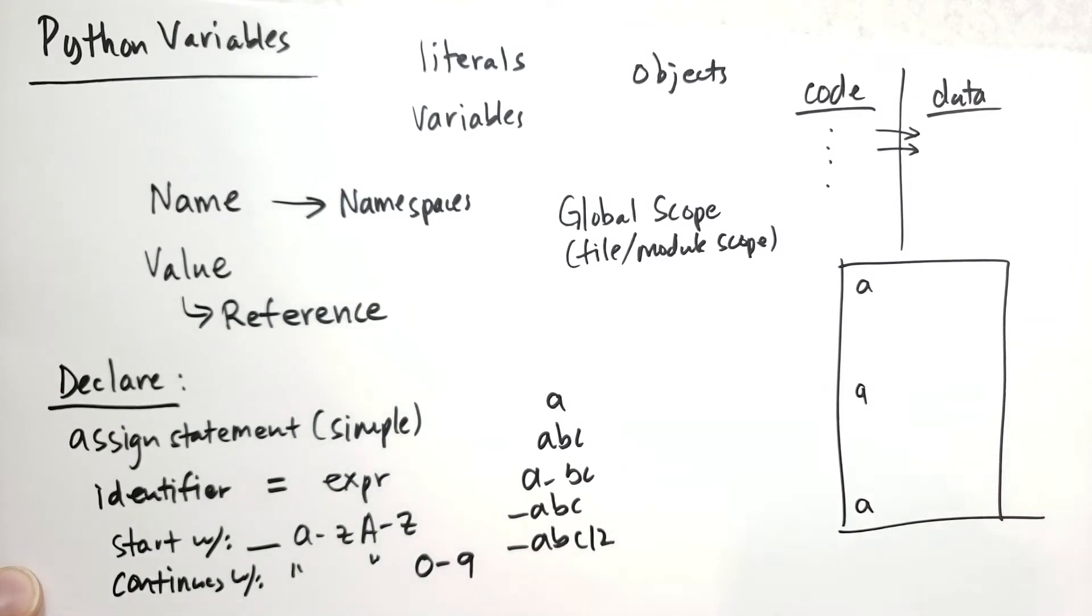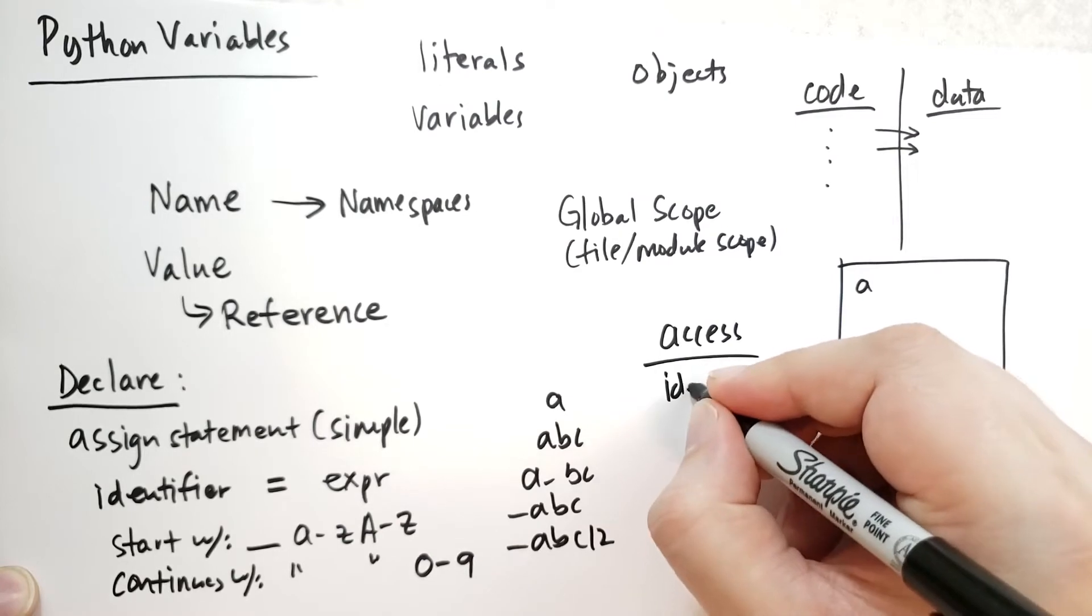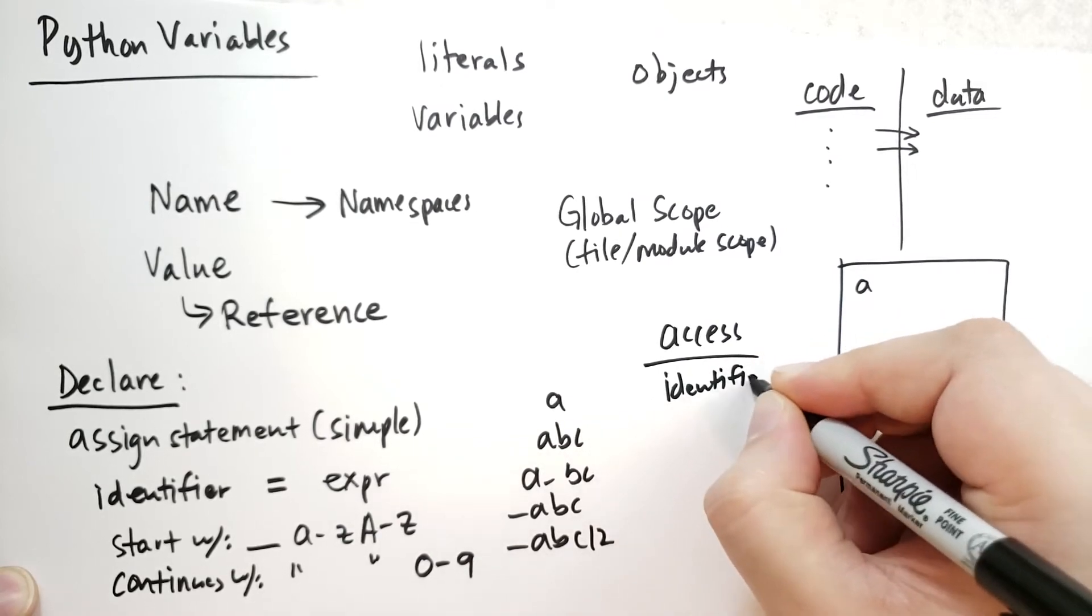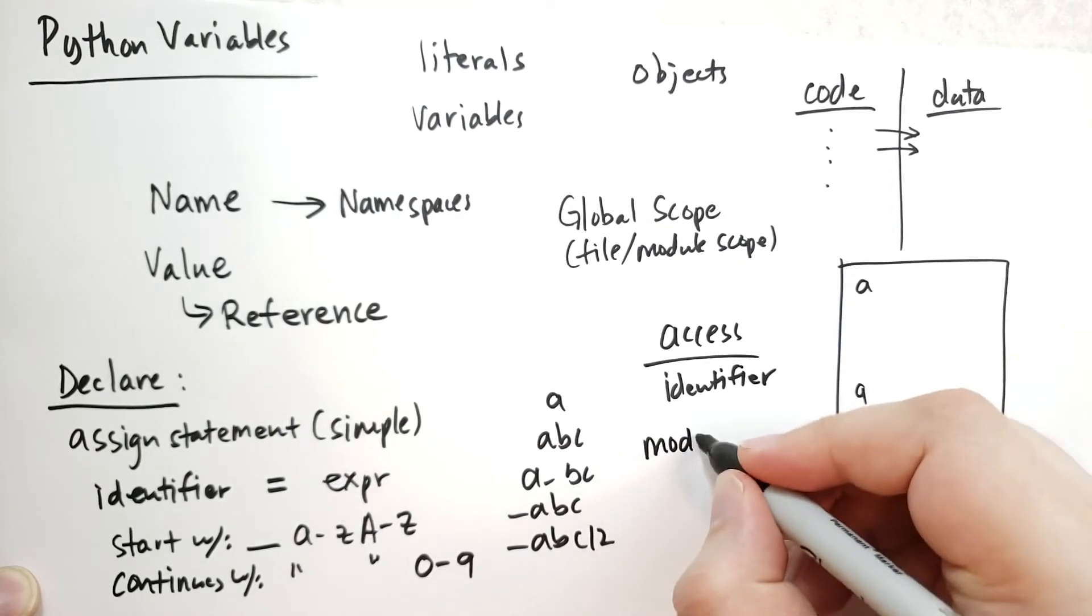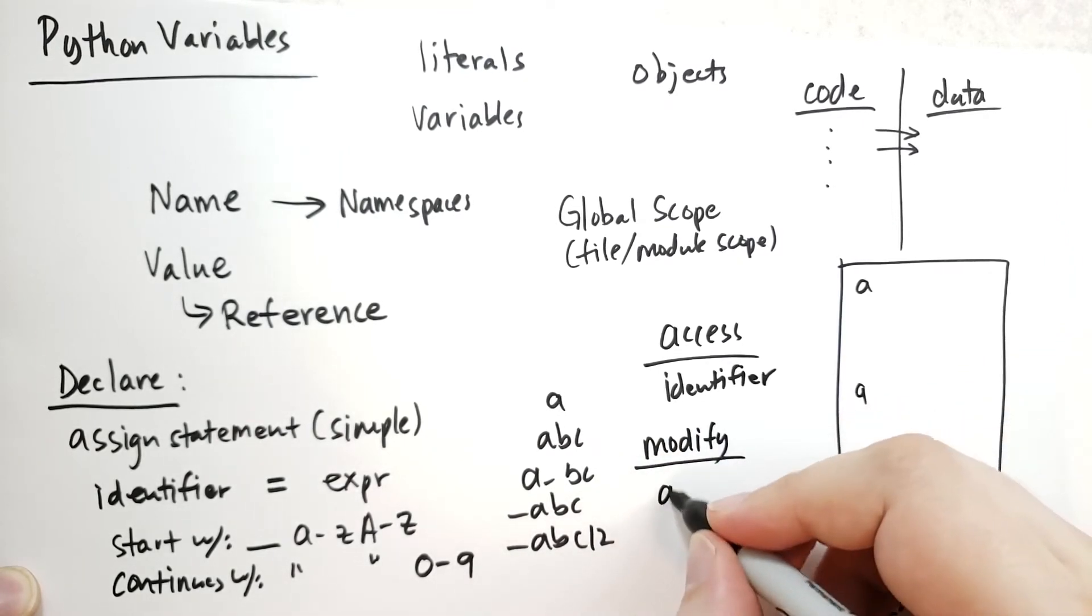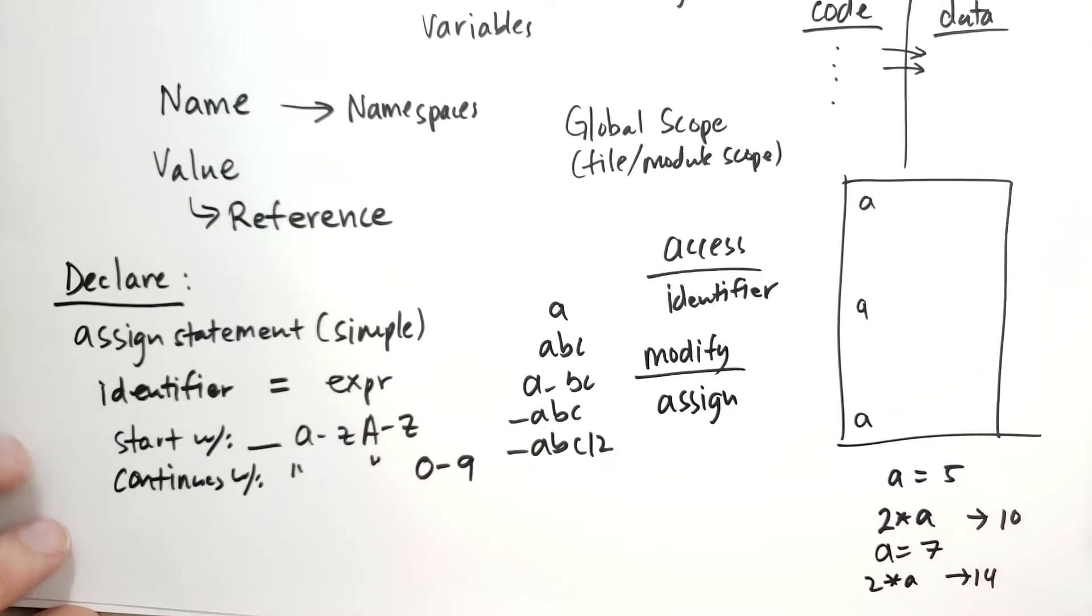After you've declared a variable, you can access the variable just with the identifier. So I can just say, you know, A is equal to 5, then I say 2 times A, that should give me 10. And we can modify the value of the variable, again, using the assigned statement. So A equals 5, now A is equal to 7, and now 2 times A will give us 14, because A has changed.